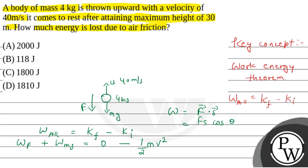So, 2000 joule energy is lost due to air friction. So, option number 1 is correct. Hope you understood it well. Best of luck.